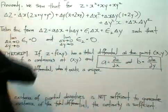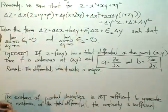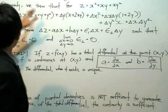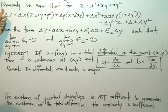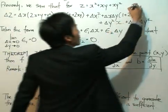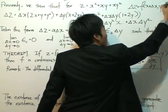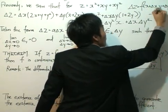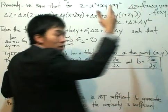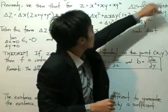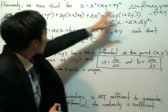Previously, we said that for a certain function — the example we gave is z equals x squared plus xy plus xy squared — we can write delta z, analyzing a change in z, given by a certain expression. Delta z is given by the function applied to x plus delta x, y plus delta y, minus the function applied to x and y at a certain point. Think about it geometrically: it's concerning two points. We apply the function to the two points and take the difference, giving us delta z.